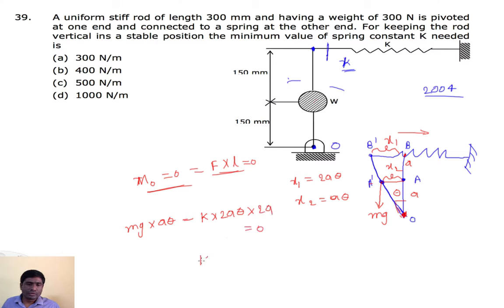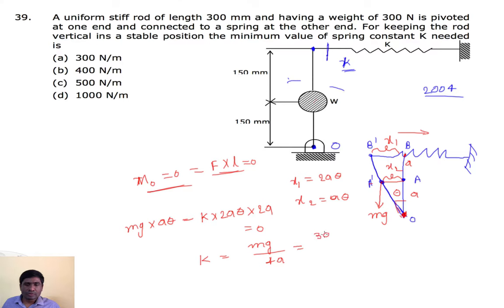From the equilibrium equation we get K equals mg/(4a). Substituting the given value mg equals 300 N, K equals 300/(4 times 150), giving K equals 500 N/m.